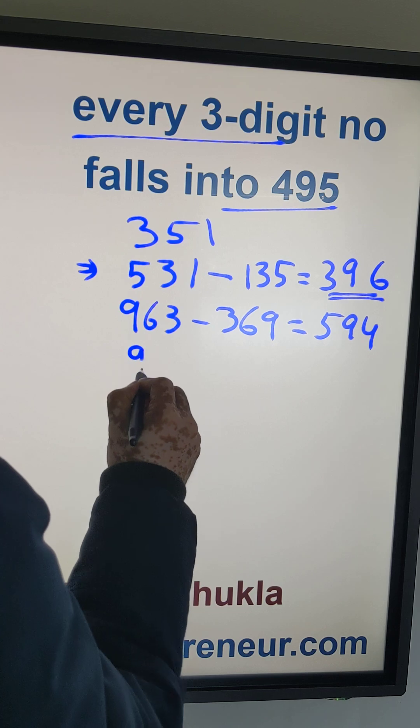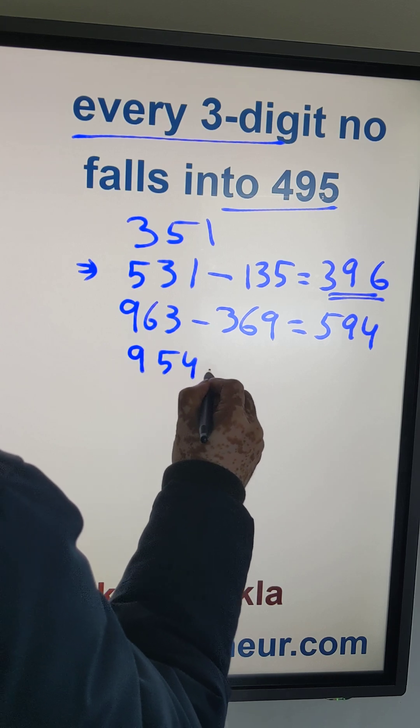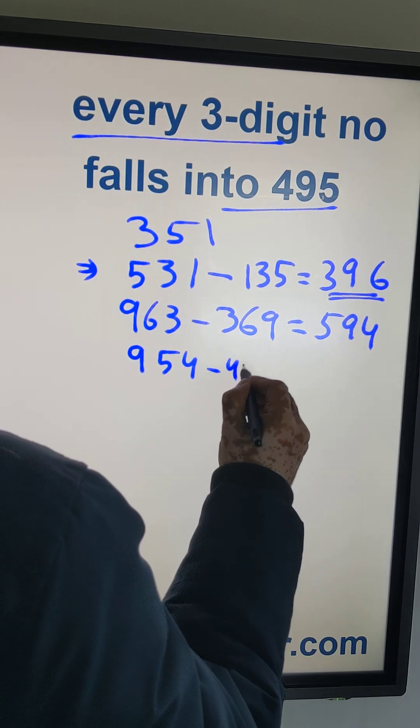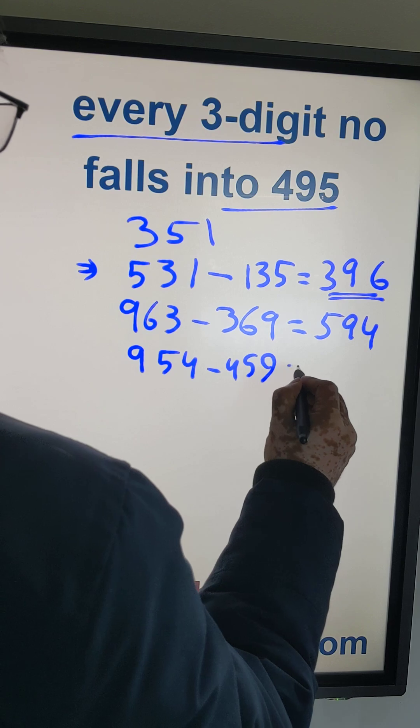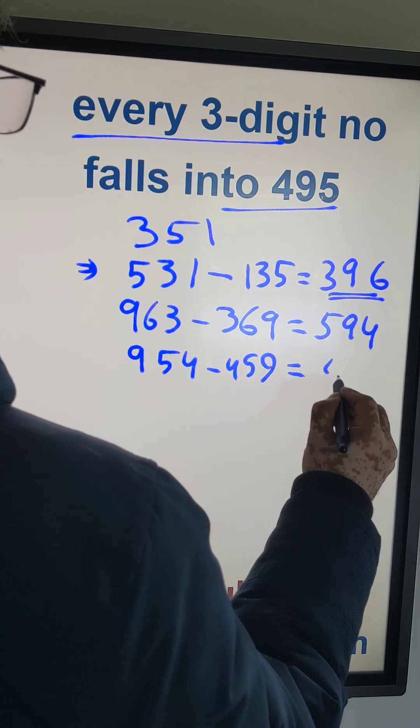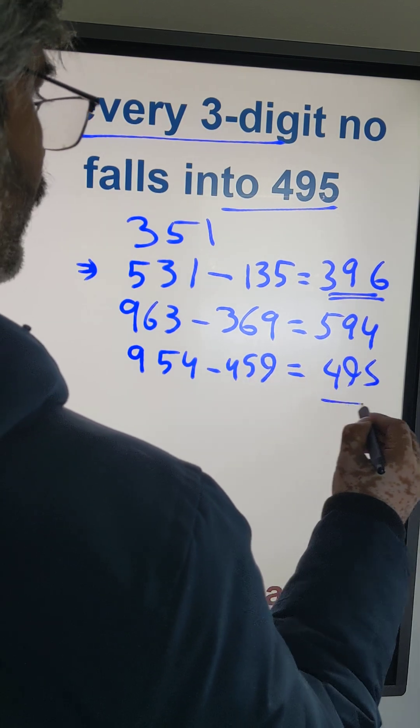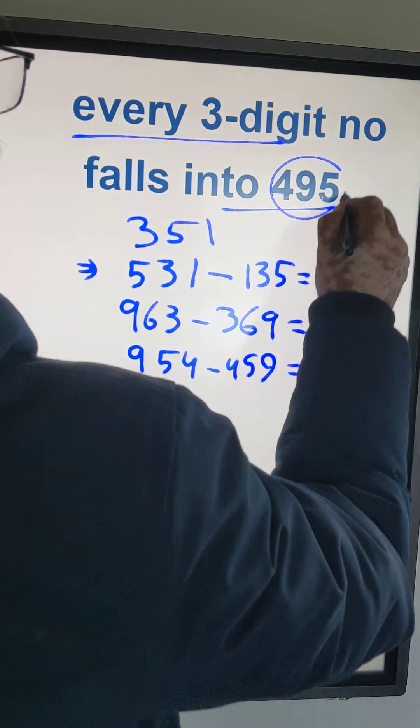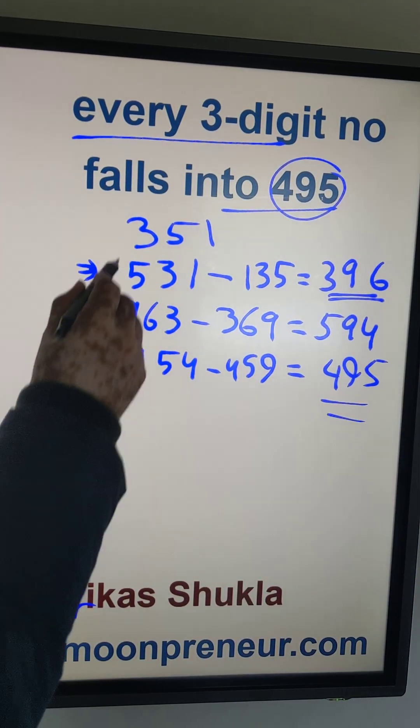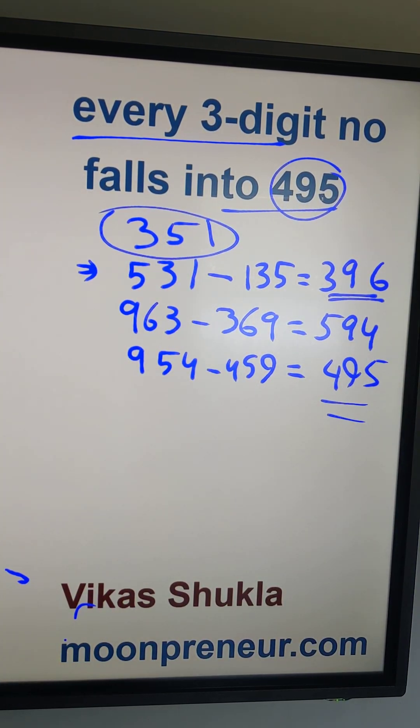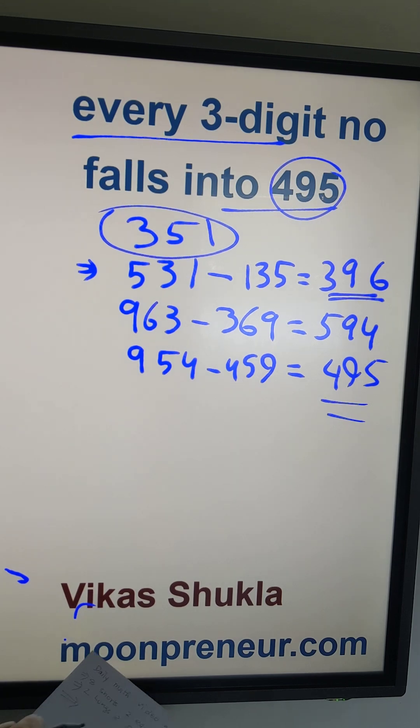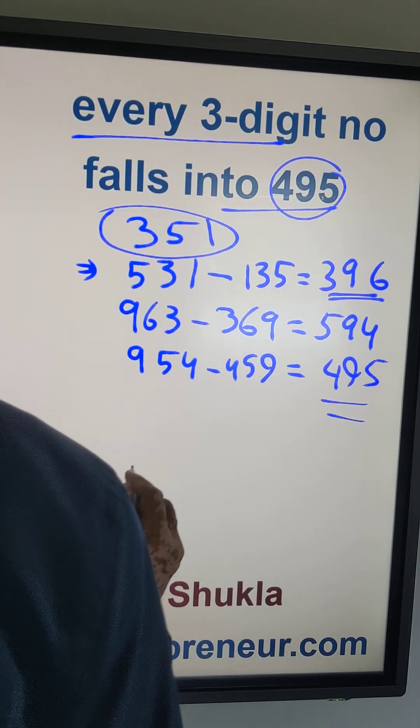Now do the same thing for 594. You take the largest number 954 minus 459, and you do this math you get this number 495. And that was this, and this is true for every single number of three digits.